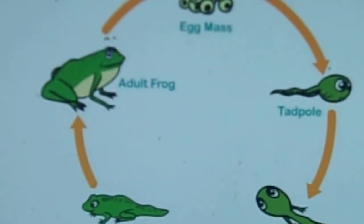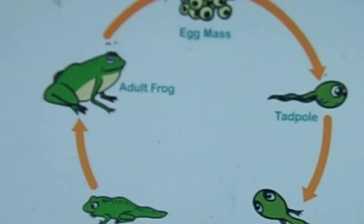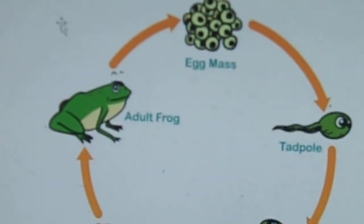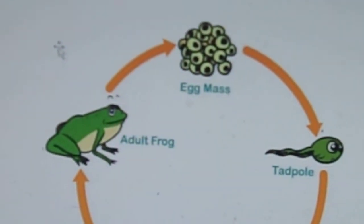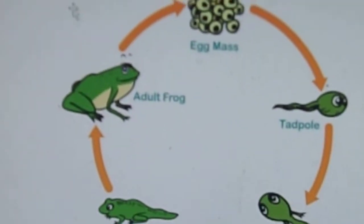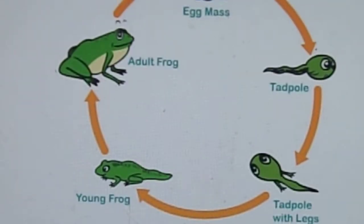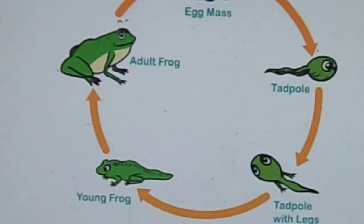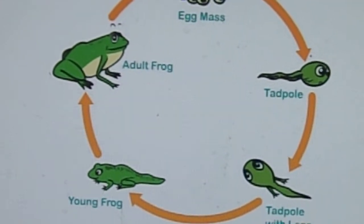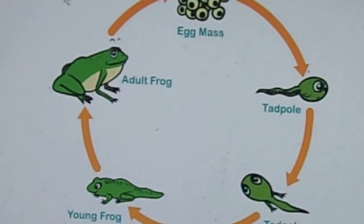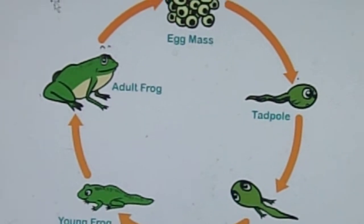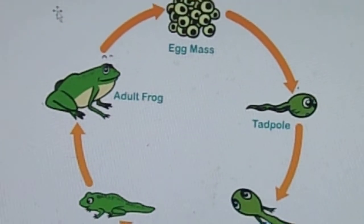Okay, let's go over the life cycle. What comes first? The eggs. And then what comes after the eggs? The tadpole. And then what comes after the tadpole? The tadpole with legs. And then what comes after the tadpole with legs? Young frog — adult with a tail. And then comes the adult, right? Yes.